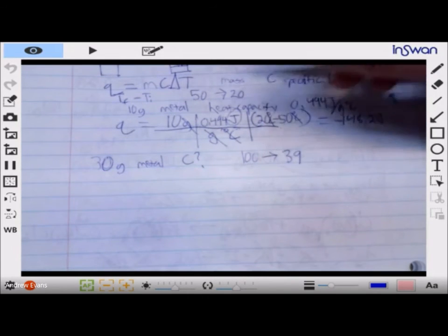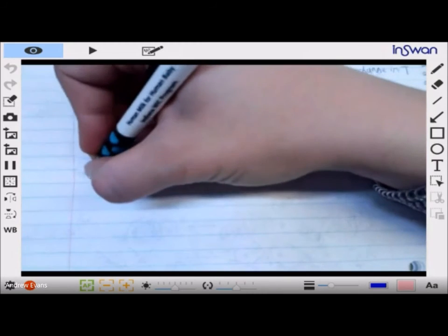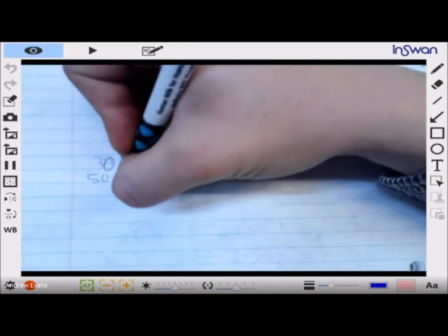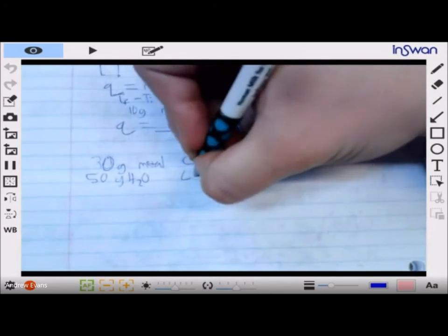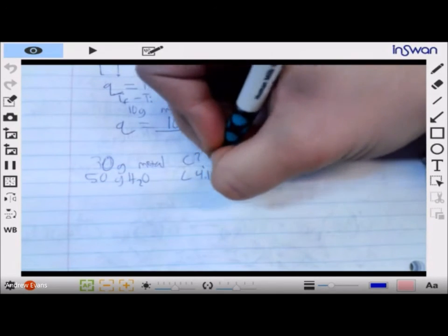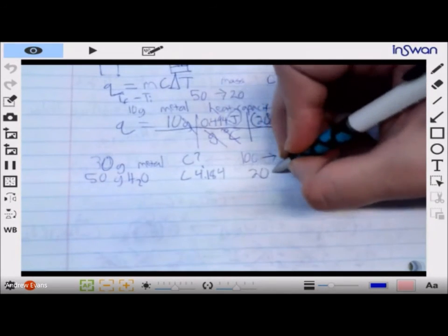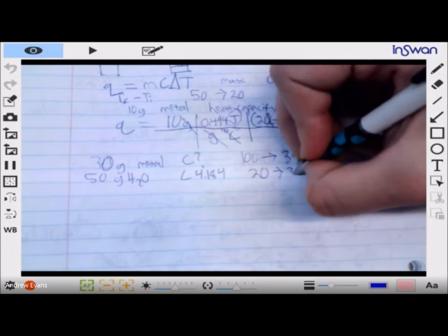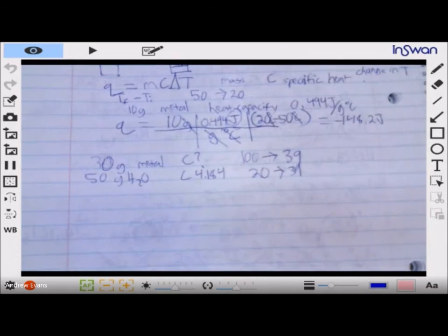100 down to 39. And water - we have 50 grams of water with a heat capacity of 4.184 and it goes from 20 degrees to 39. What is the heat capacity of the metal?